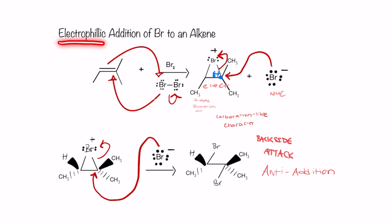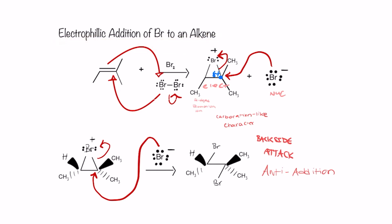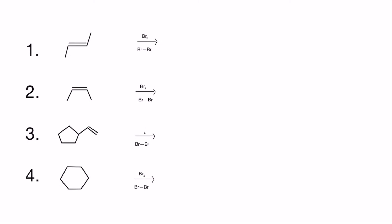As a recap, whenever you have electrophilic addition of bromine to an alkene, the double bond is going to break and in its place you're going to have both bromine atoms attaching in anti form. Now let's go ahead and try some examples. Here I have some examples laid out. We're going to do the first one together so you can try the rest on your own. Remember, whenever we're adding Br2 to an alkene, this double bond is going to break, and on those two carbons we're going to add bromines in an anti position.